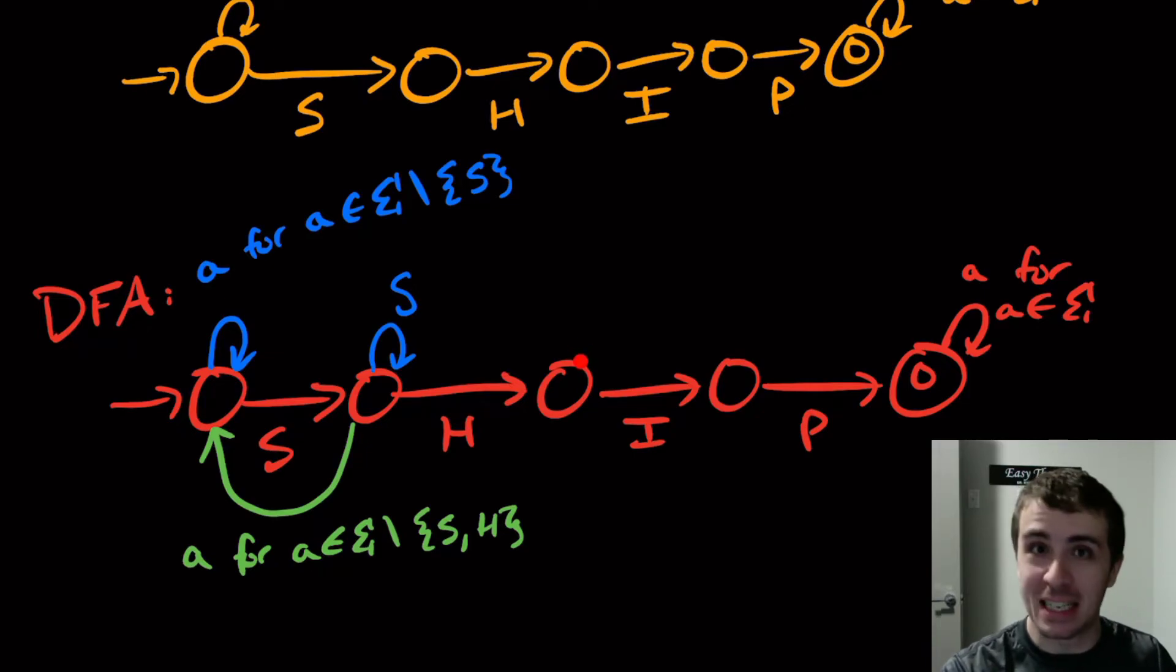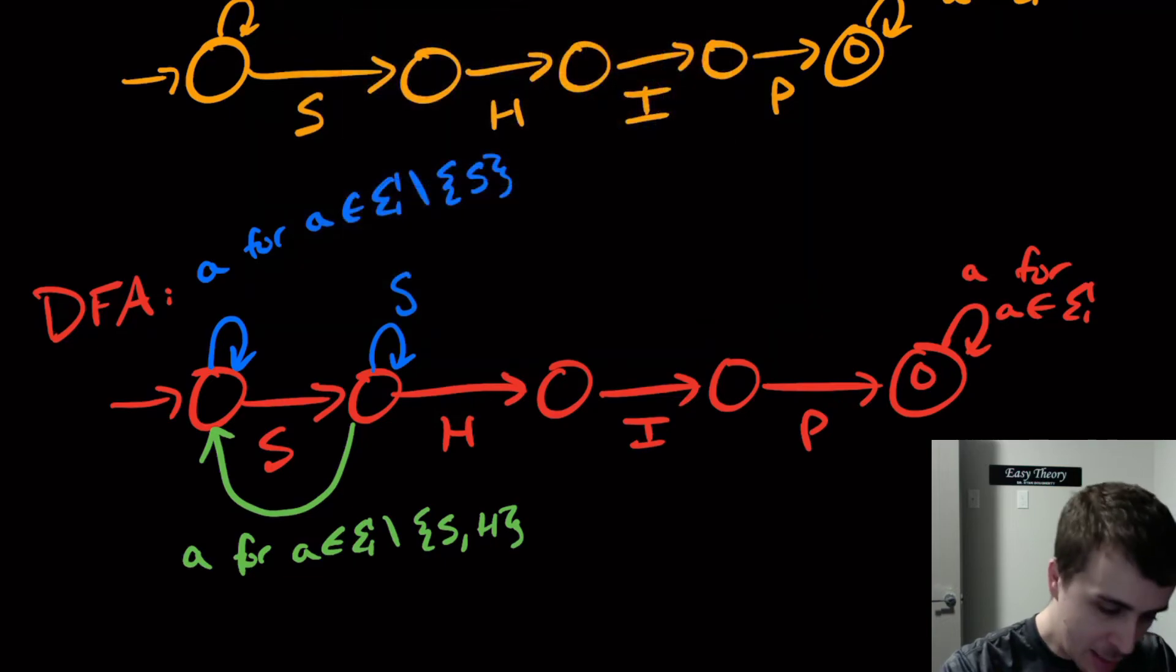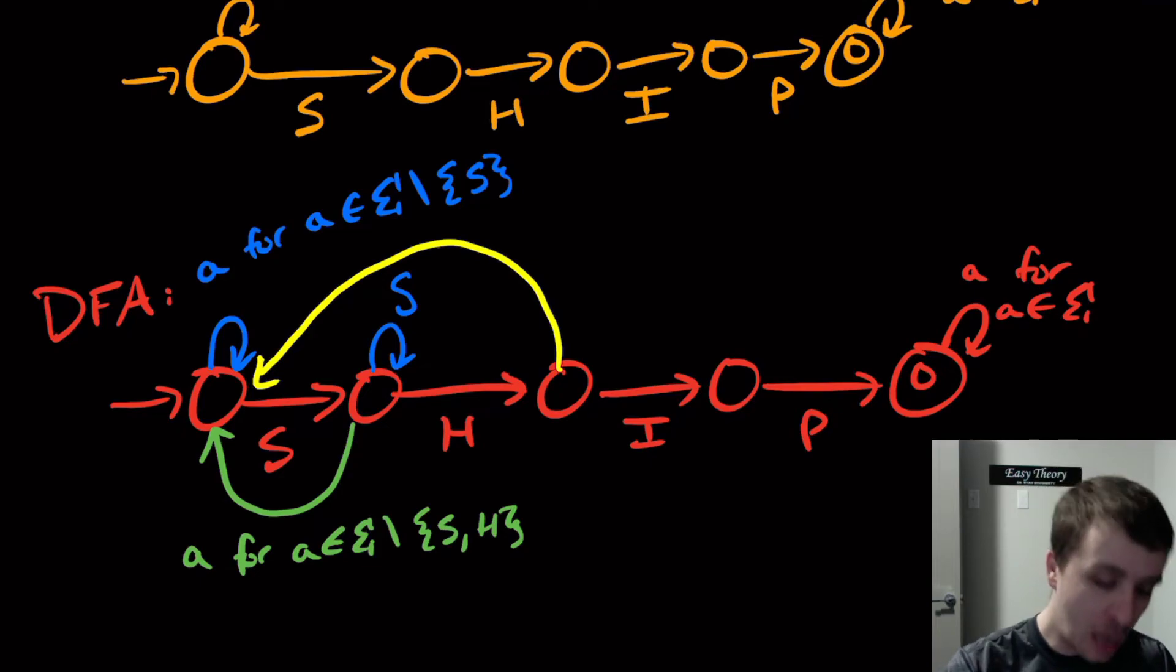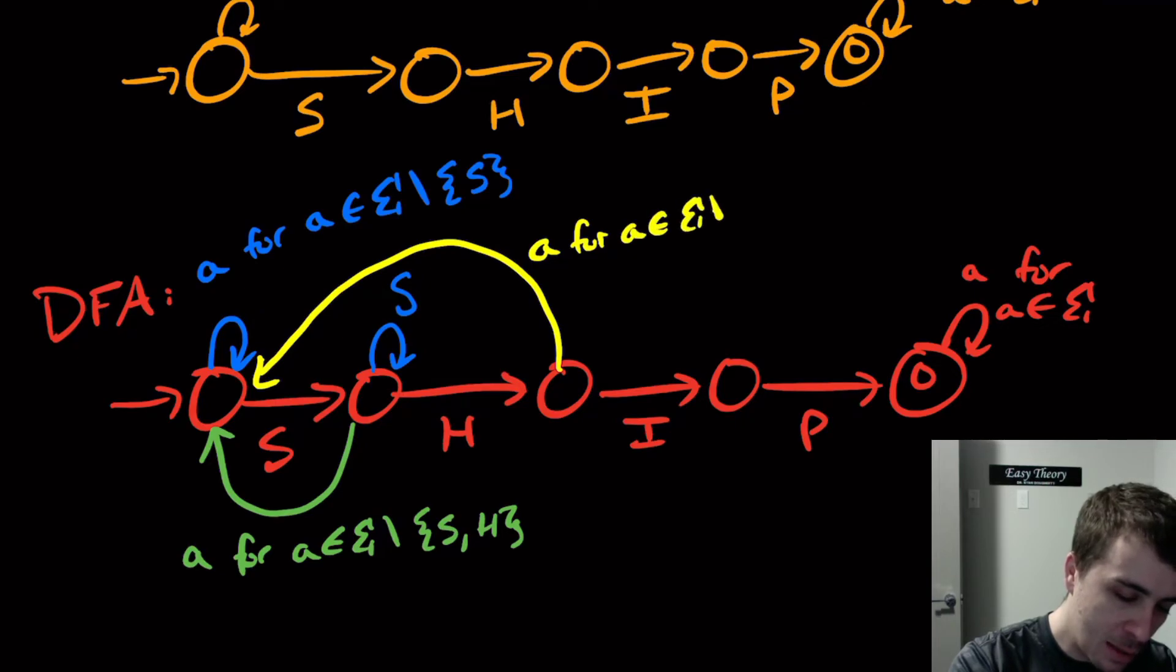Which, as far as I can tell, is not a ship. So we're going to come back to the beginning on every single possible character other than I. So this is a for a in Sigma set minus I.